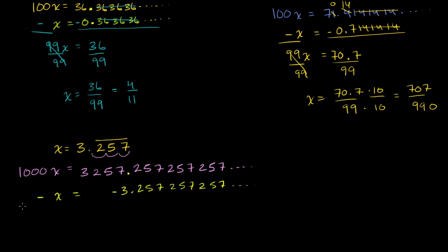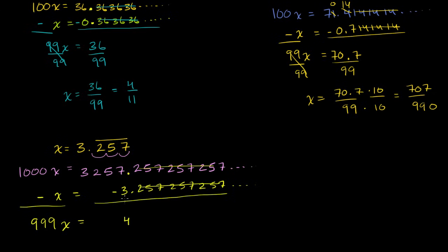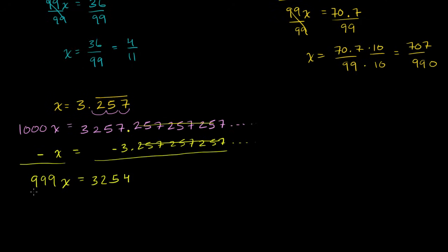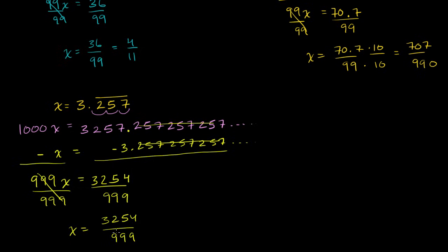So let's do that subtraction. On the left-hand side, 1000 of something minus 1 of that something leaves 999 of that something. On the right-hand side, the repeating part cancels out. 7 minus 3 is 4, then you have the 5, the 2, and the 3. So 999x is equal to 3254. Dividing both sides by 999, you are left with x is equal to 3254 over 999. This is an improper fraction since the numerator is larger than the denominator.